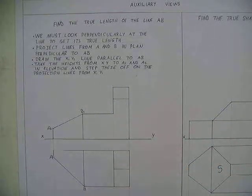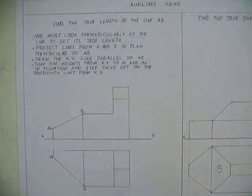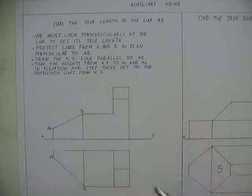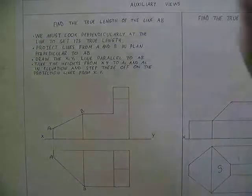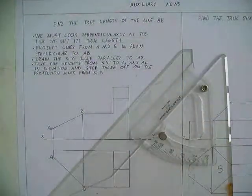So I am going to project from the plan and get my heights from elevation. So I am going to draw an auxiliary elevation just of the line AB. So I must project from the line perpendicularly to AB.